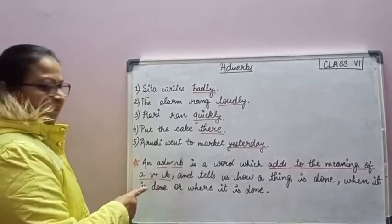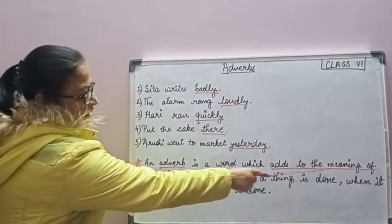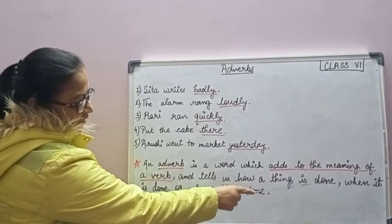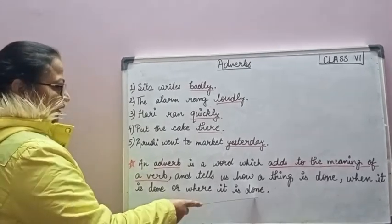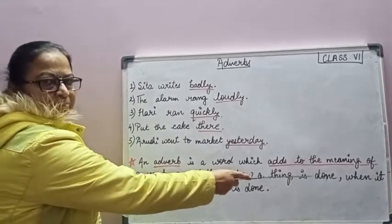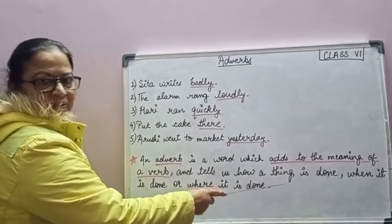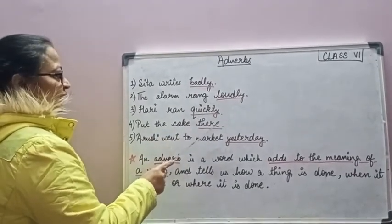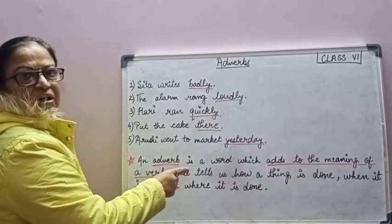So we can summarize: an adverb is a word which adds to the meaning of a verb and tells us how a thing is done, when it is done, or where it is done. It means an adverb tells us the manner, time, or place of the action done. So badly, loudly, quickly, there, and yesterday are adverbs.